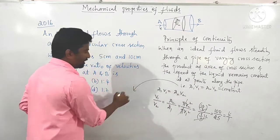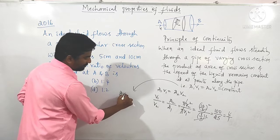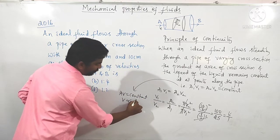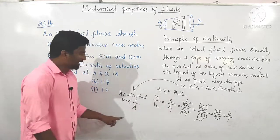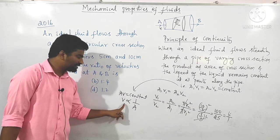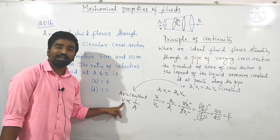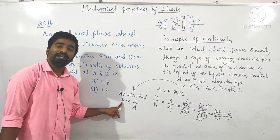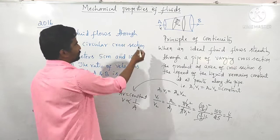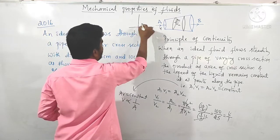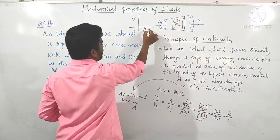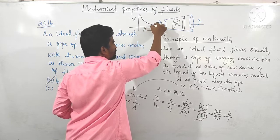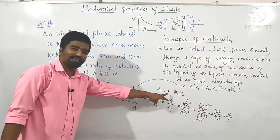Since AV = constant, velocity is inversely proportional to area. Where area is large, speed of the fluid is less; where area is small, speed of the particle is more. If we plot velocity versus area, as area increases, velocity decreases. This is the plot for this case.